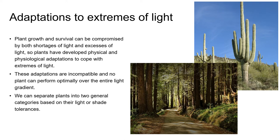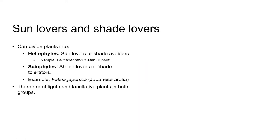We can divide plants into two general categories based on their tolerances of light or shade. Plants that perform best at relatively high levels of light intensity can be referred to as heliophytes. Helio comes from the Greek word for sun and phyte means plant, so this term basically means sun lovers or shade avoiders. Some of these plants may have evolved adaptations to heat, as covered in a separate unit on plant adaptations to heat and drought.